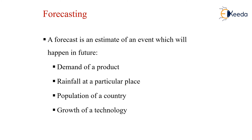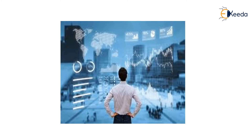Similarly, the population of a country for 10 years is determined by the census, which is also done with the help of forecasting methods. By this forecasting, we will be able to see the future, as shown in this picture, and decide about certain factors which will affect production, planning, and control.